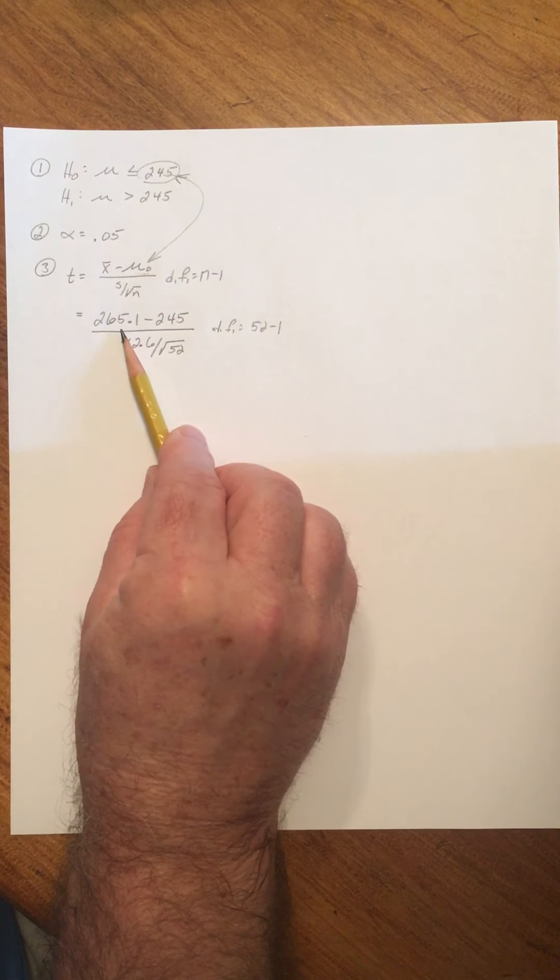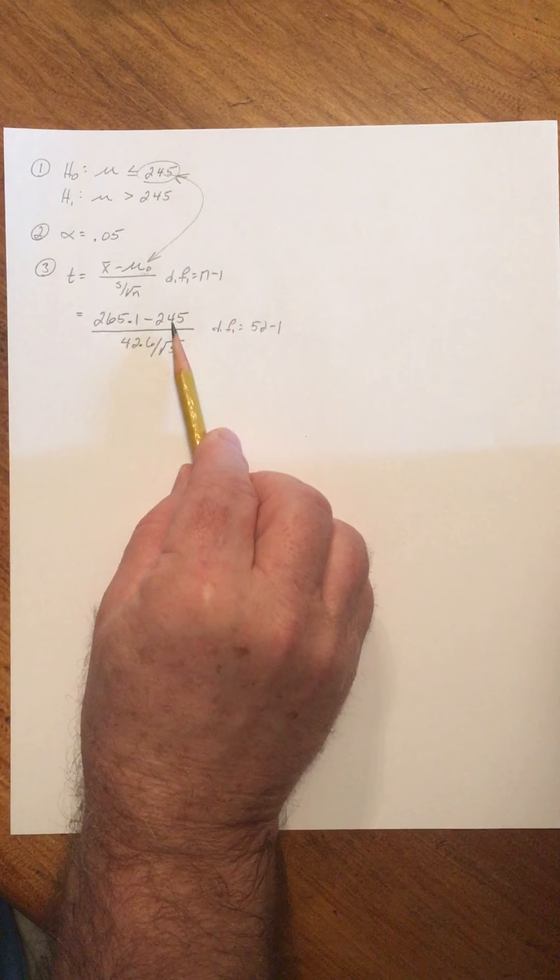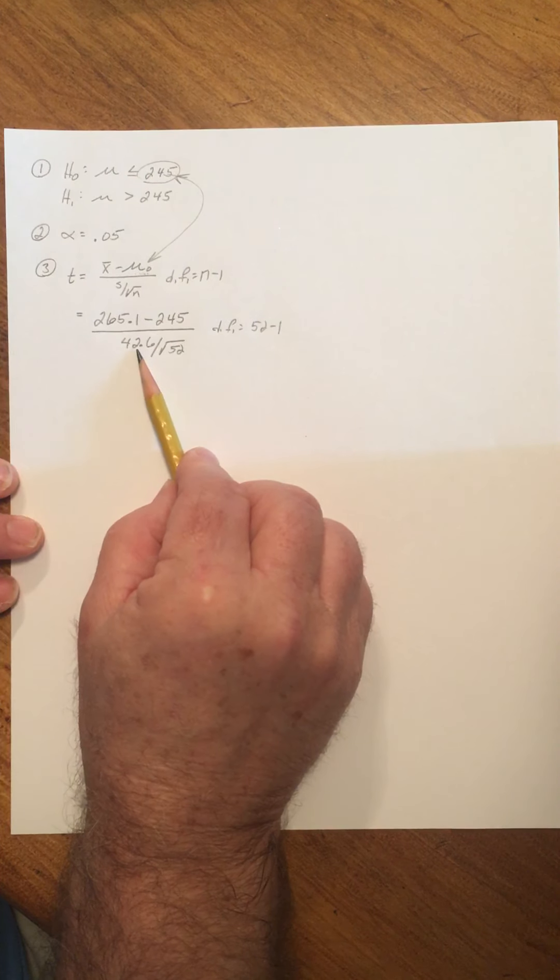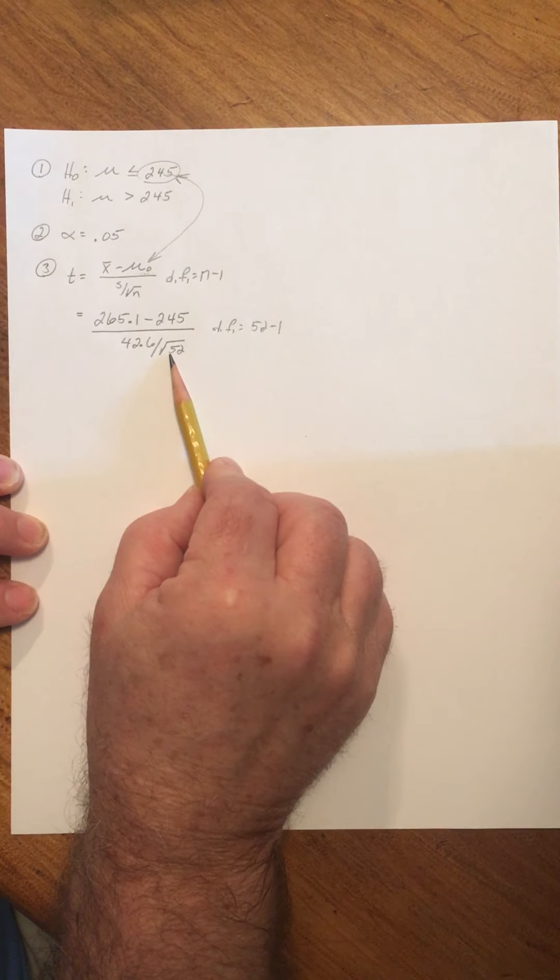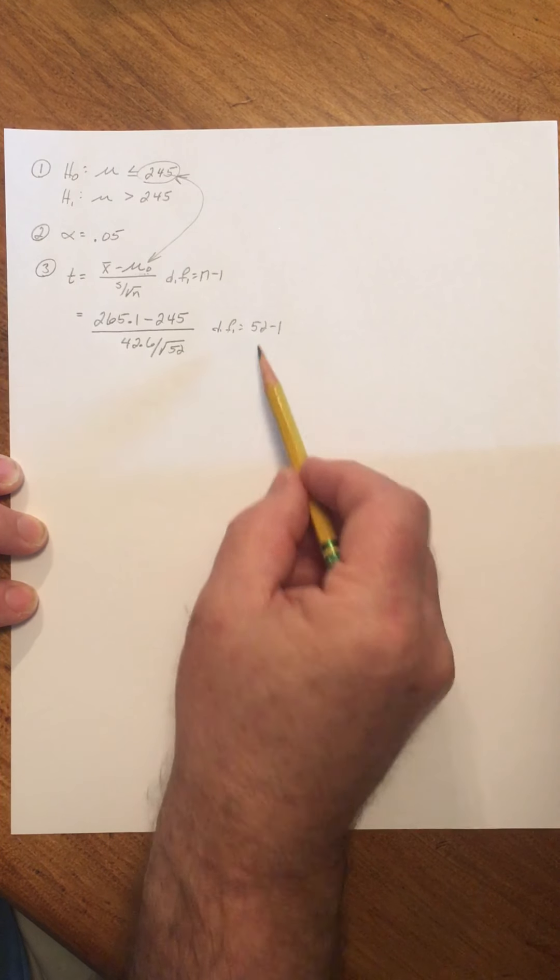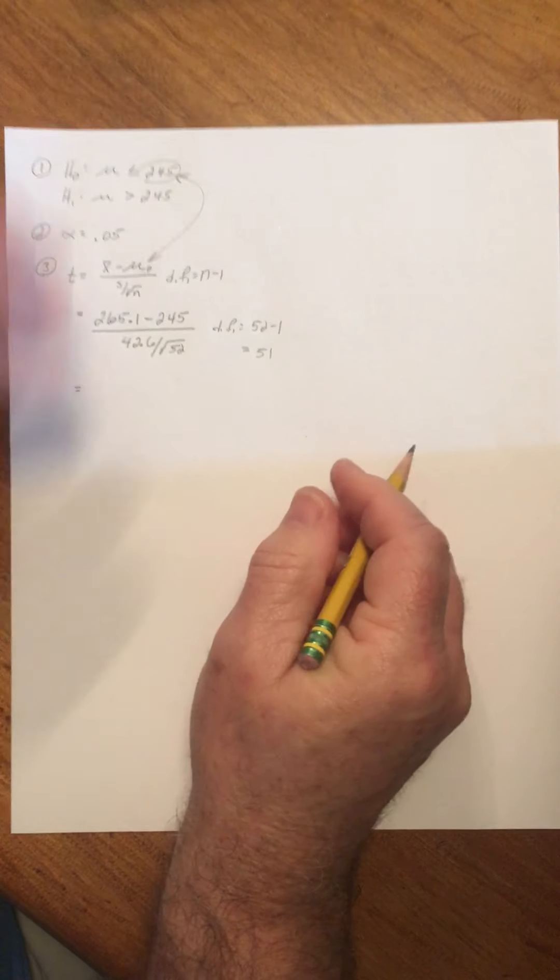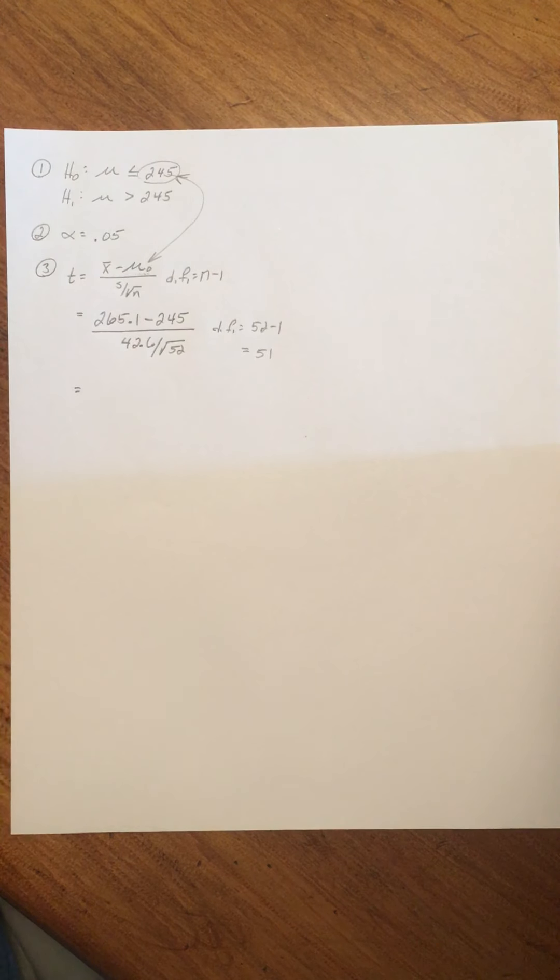And so we have 265.1. These were the given values. 245 was from the null hypothesis. The 42.6 and the 52 were given in the problem. And our degrees of freedom are going to be 51 here.